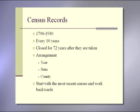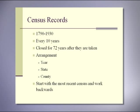The census is closed for 72 years after it is taken and records are arranged by census year, state, then county, and beginning in 1880, enumeration district. We generally recommend that you start with the most recent census and work backwards, although I'm going to start with the first census and move forwards.